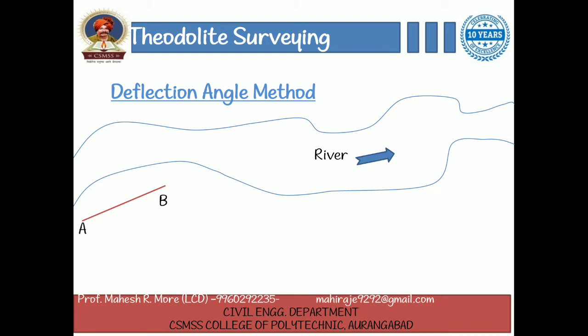The theodolite is now shifted and centered over B. The plate bubble is leveled and vernier A is set at 0 degrees, then a backsight is taken on A. The telescope is transited by turning clockwise and the ranging rod C is bisected. The vernier readings are taken. Then the deflection angle phi is determined.